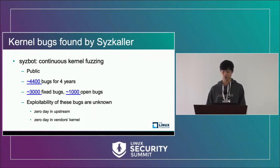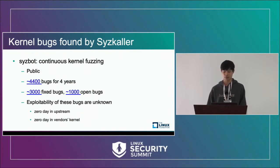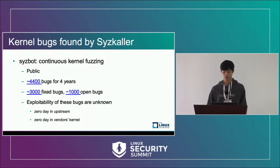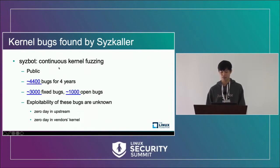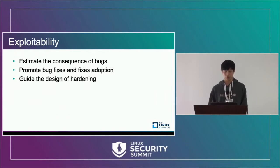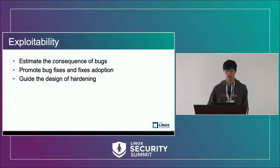Studying the exploitability of fixed bugs is also interesting because vendors don't adopt all the fixes from upstream. You can always find a lot of fixes from upstream being ignored by vendors. Those ignored fixes could contain critical fixes to exploitable bugs, but vendors don't know which one is critical because they don't know the actual exploitability. Knowing the exploitability could give attackers the potential for finding zero-days in a vendor's kernel. From the defender's side, we should know the exploitability before attackers do. Assessing exploitability gives you an estimation of the consequence of bugs — whether exploitable or not. When we know a bug is exploitable, we should fix it as soon as possible to reduce the time window, and it should have top priority compared to other bugs.